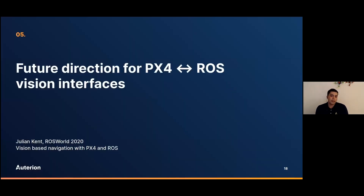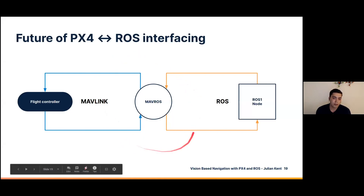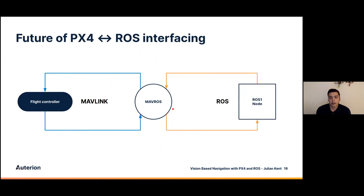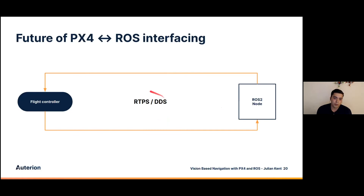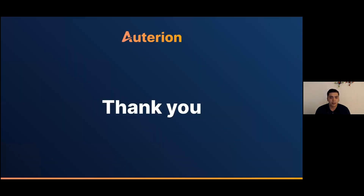One more future item: PX4 and ROS communications. Right now MavROS sits in the middle doing all translation. This is with ROS 1, but as we go to ROS 2 we get RTPS and DDS. PX4 actually has support for RTPS messaging, so as we switch to ROS 2 we can speak directly with the controller without needing MavROS in the middle. Nuno will be presenting on that next, but in the meantime I can take questions. Thank you.